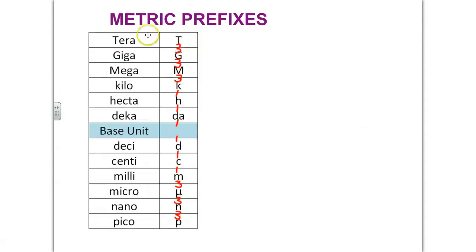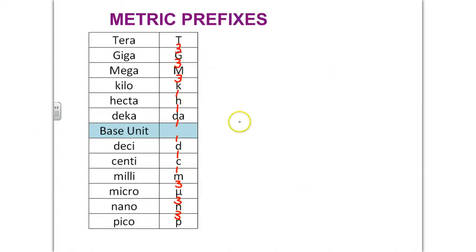Here are the metric prefixes. Terra is capital T, Giga is capital G, Mega is capital M, Kilo is K, Hecta is H, Deca is D-A. A base unit could be one of a few things, and we'll get back to that in a moment. Desi is lowercase d, centi is c, milli is m. Micro is a U with a stem in the front of it — draw a U and place a stem straight down the front. N is for nano, and pico is a lowercase p.